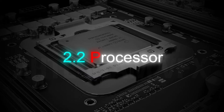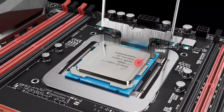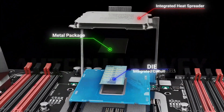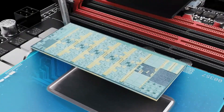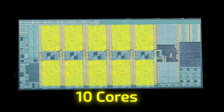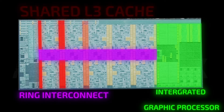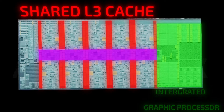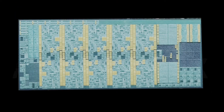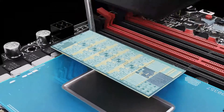Moving on to the processor, also known as the Central Processing Unit (CPU), it is the primary component of a computer responsible for executing instructions and performing calculations. A processor consists of an integrated heat spreader, metal package, and die — also known as integrated circuits. This integrated circuit inside has a few different sections, but the most recognizable are the cores. The middle section is known as the ring interconnect, the rightmost part is the integrated graphics processor, the middle lanes are the shared L3 cache, the top-left portion is the memory controller, and the bottom-left is the platform IO, which controls input and output.